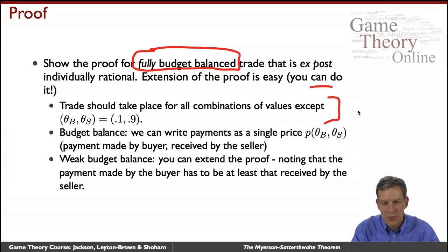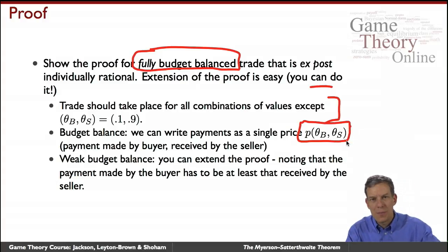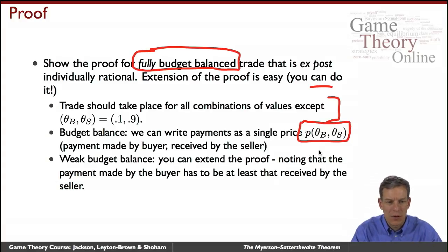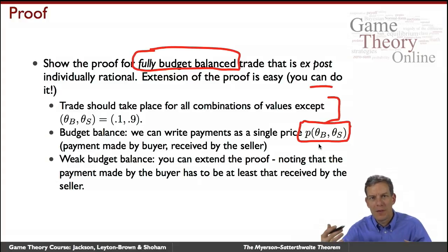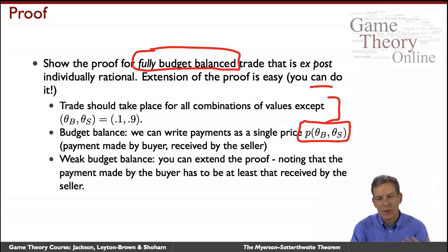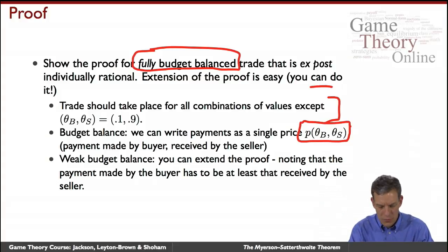With full budget balance we can write payments as a single price p(θ_B, θ_S) — the payment from buyer to seller. With weak budget balance you'd have two prices where the payment by the buyer is always at least the payment received by the seller, and everything in the proof works through for that case as well.